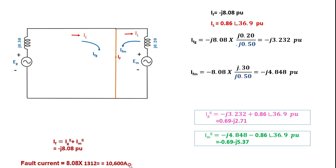This is how you calculate the fault current and individual machine contributions using Thevenin's equivalent circuit for a three-phase balanced fault problem.